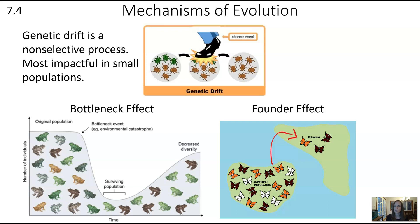The founder effect is similar, but it's not a catastrophe — only a few individuals make it to a new location, such as a new island. Here it's showing butterflies. Those new founding individuals, because it's a very small group, probably don't represent all the alleles, the genes, that you saw in the original population.